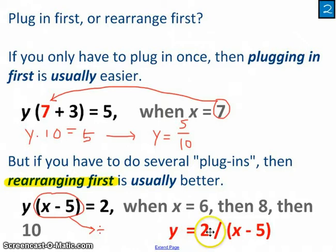This second mode, it's a lot easier for me to work from here, to put in the 6 and say, okay, Y is equal to 2 divided by 6 minus 5 is 1, so it's 2 over 1, or 2. And then the second time, Y is equal to 2 over 8 minus 5, or in other words 2 over 3, and so on.